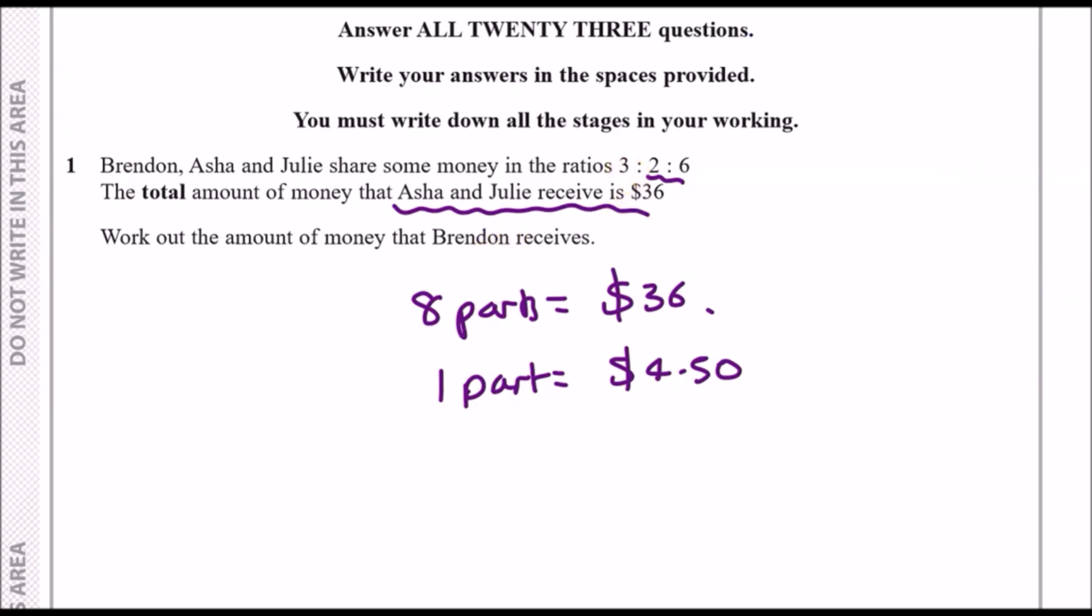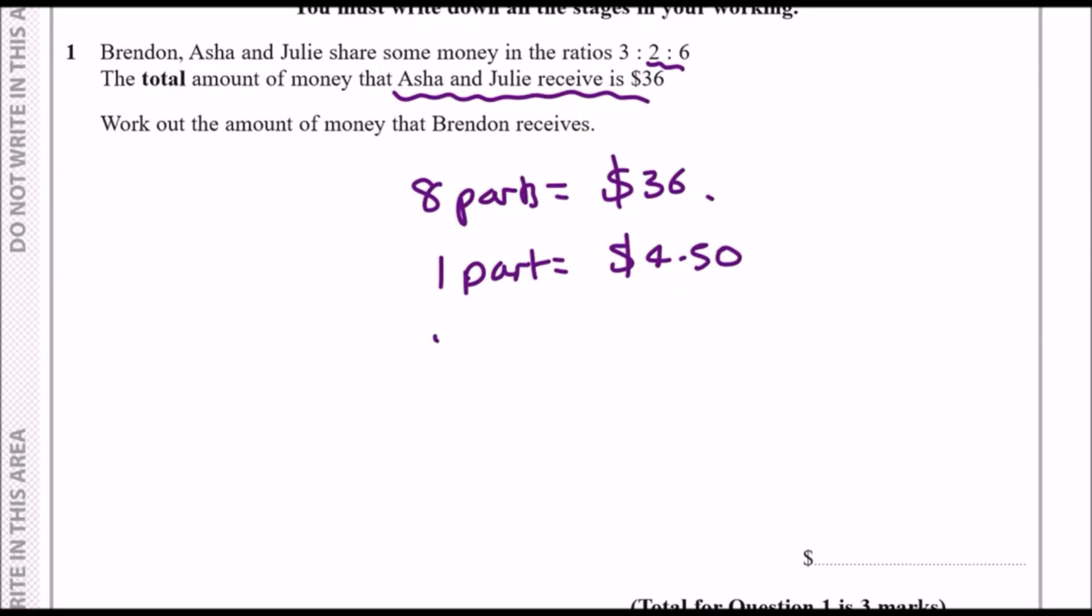If you do that guys you should get $4.50. For Brendan we know that Brendan receives 3 parts, so we multiply our result by 3 and you should get an amount of $13.50 and that's it.